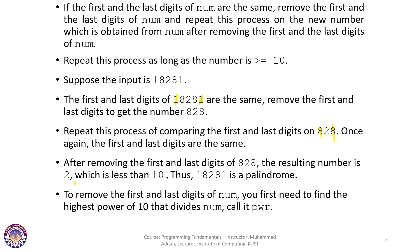Since 2 is less than 10, we confirm that 18281 is a palindrome. To remove the first and last digits of num, you first need to find the highest power of 10 that divides num. We need to find this highest power of 10.